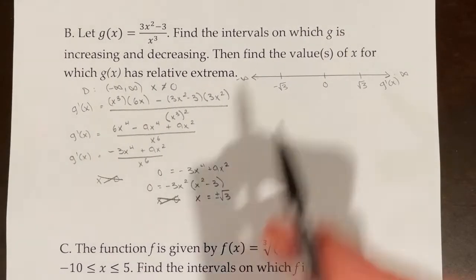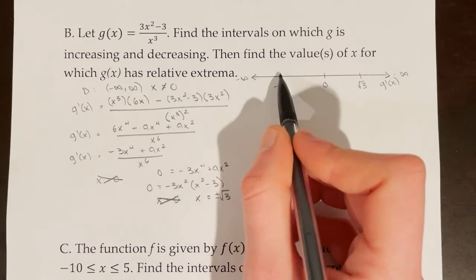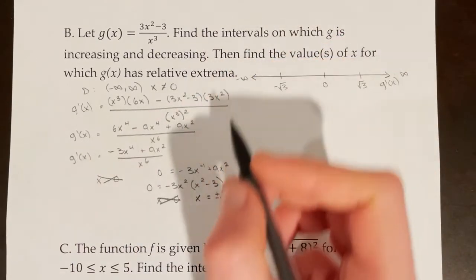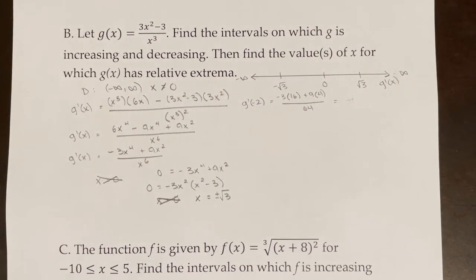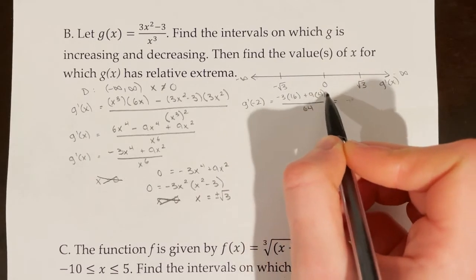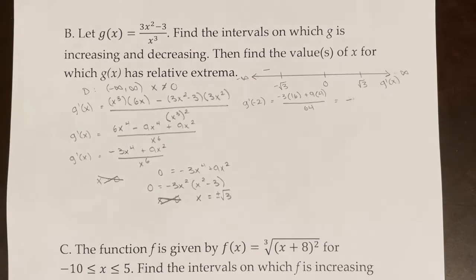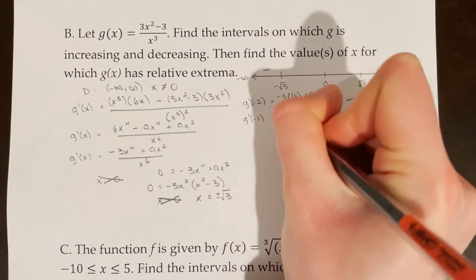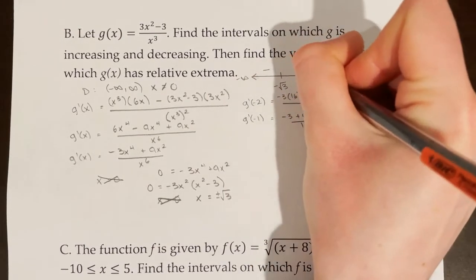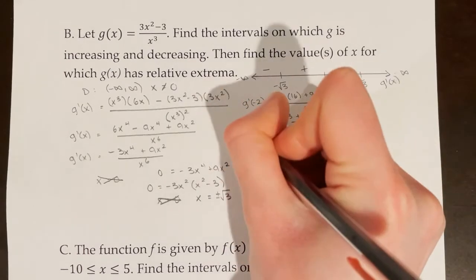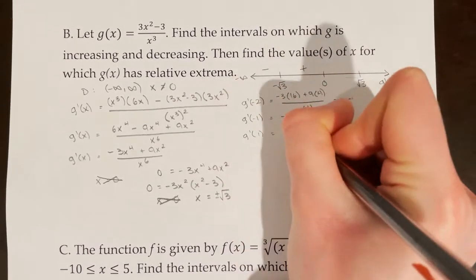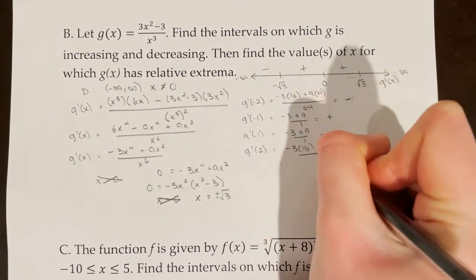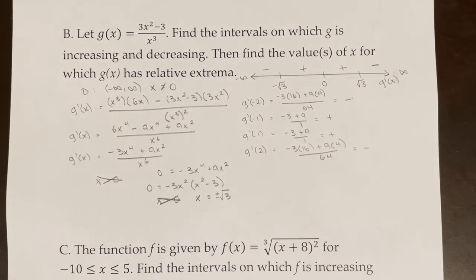Now I need to test values in each interval. Testing negative 2: g prime of negative 2 gives negative 48 plus 36 over 64, which is negative. Testing negative 1: g prime of negative 1 equals 6, which is positive. Testing 1: g prime of 1 also equals 6, positive. Testing 2: g prime of 2 is a negative number. So my sign chart is now complete.